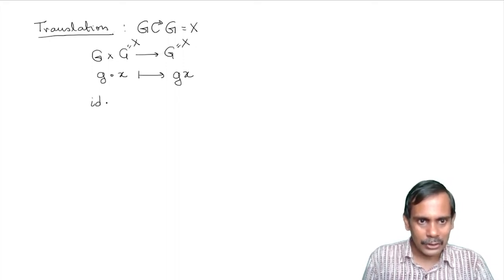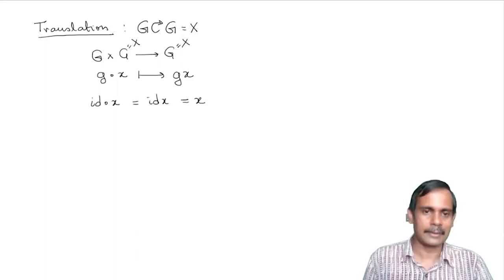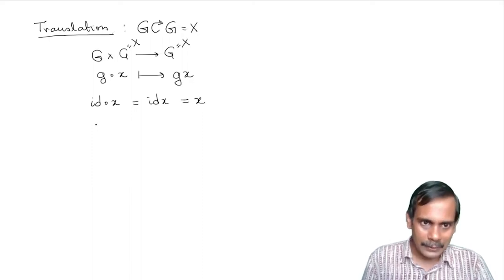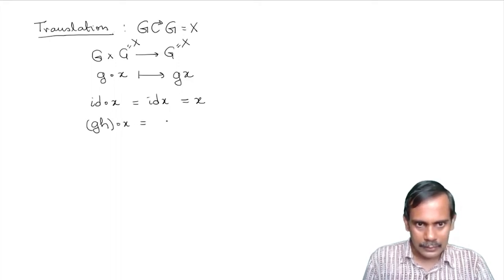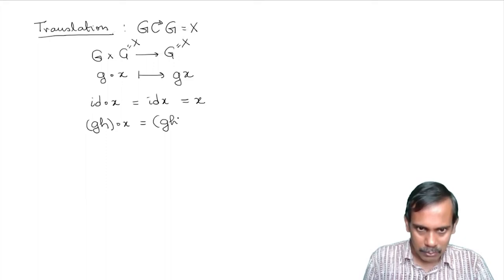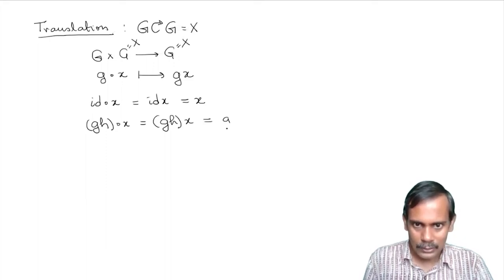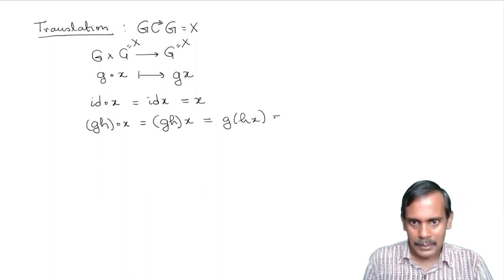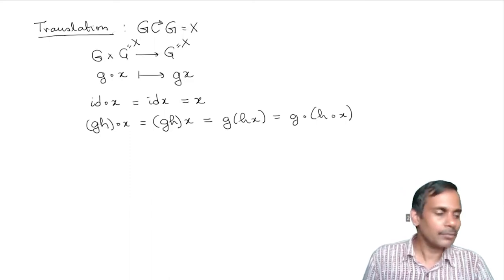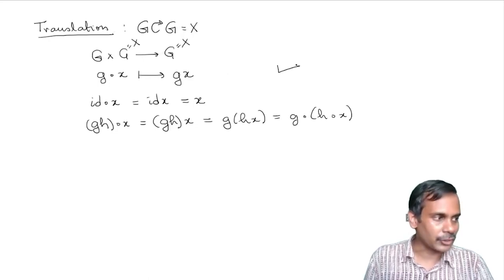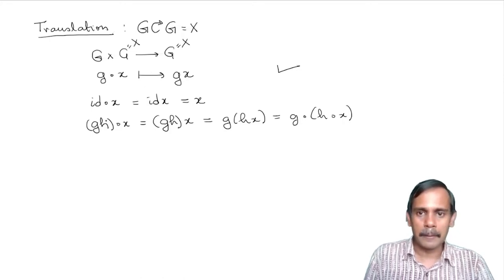Let's check the axioms. If we take the identity element and act it on x, that's just identity multiplied by x, which equals x. For the compatibility axiom, GH acting on x equals GH times x by definition, and by associativity this is G times (Hx), which is the same as G acting on H acting on x. So associativity takes care of compatibility — this is the left translation action.